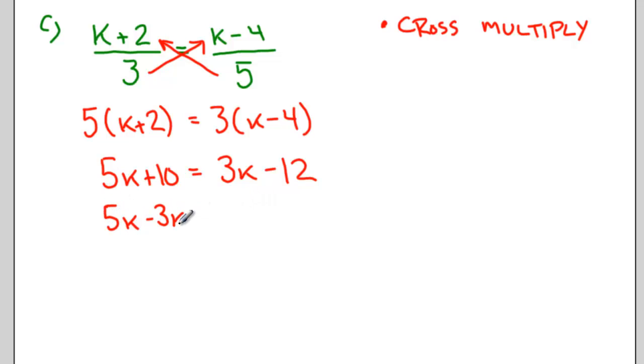Rearranging, bringing all the variable terms to the one side and all the constant terms to the other, I end up with 2k equals negative 22. Or k equals negative 22 divided by 2. Which means that k equals negative 11.